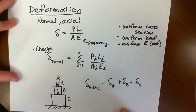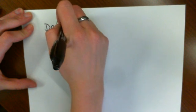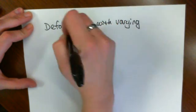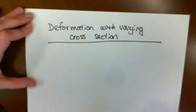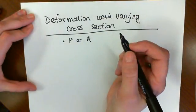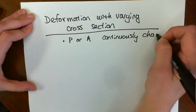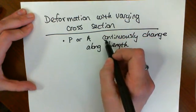Now what happens if we have deformation with a varying cross-section? If we have deformation where either our load or our cross-section continuously change along the length, with the keyword here being continuously.